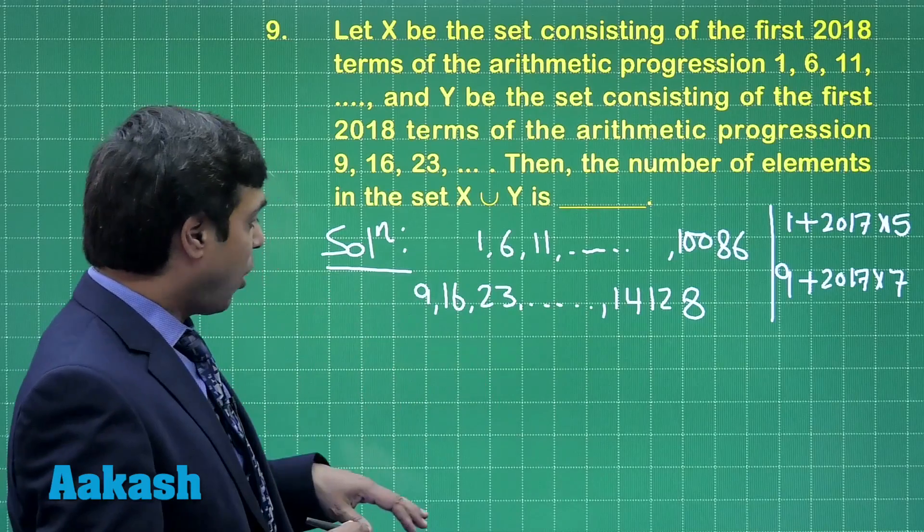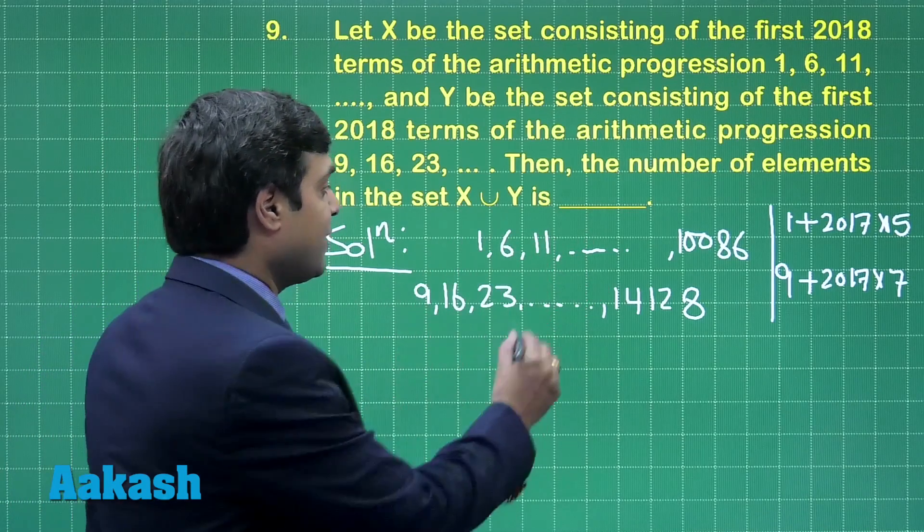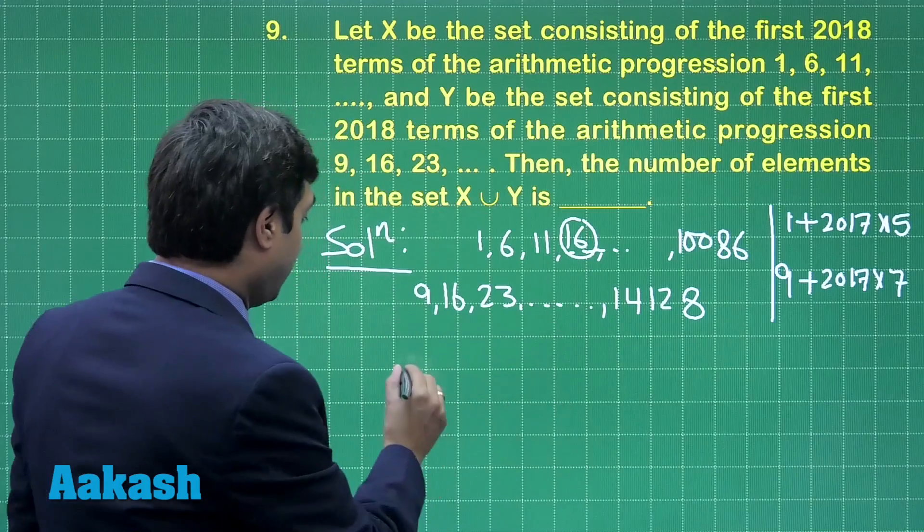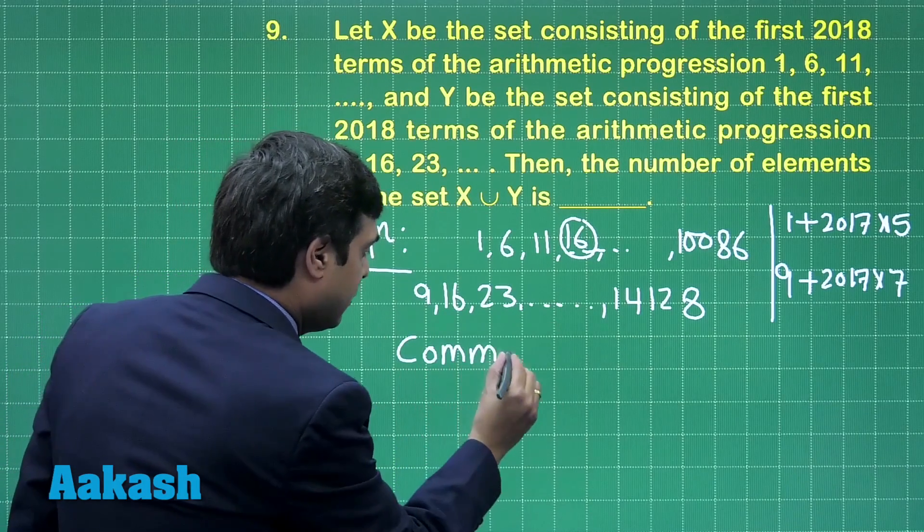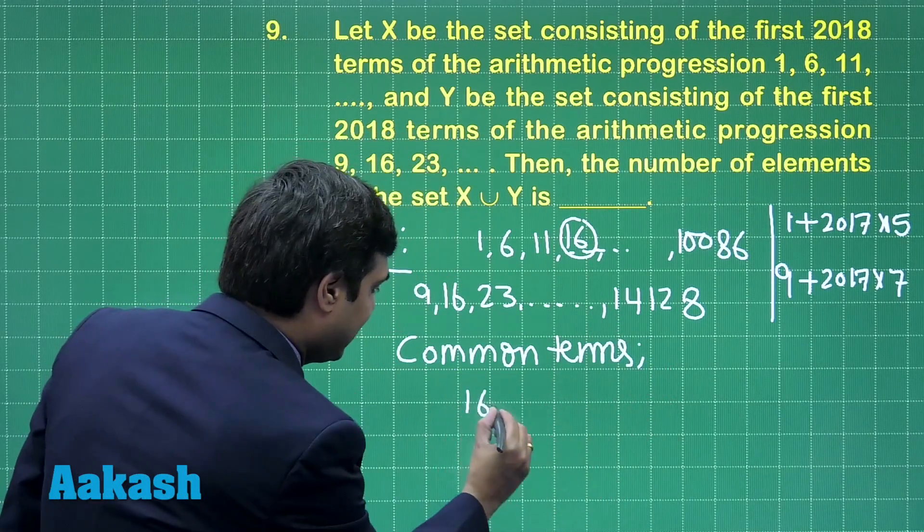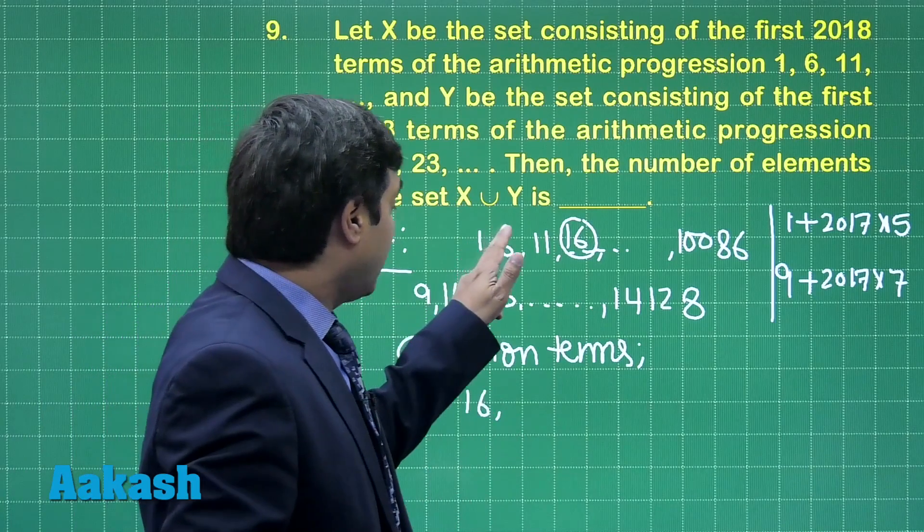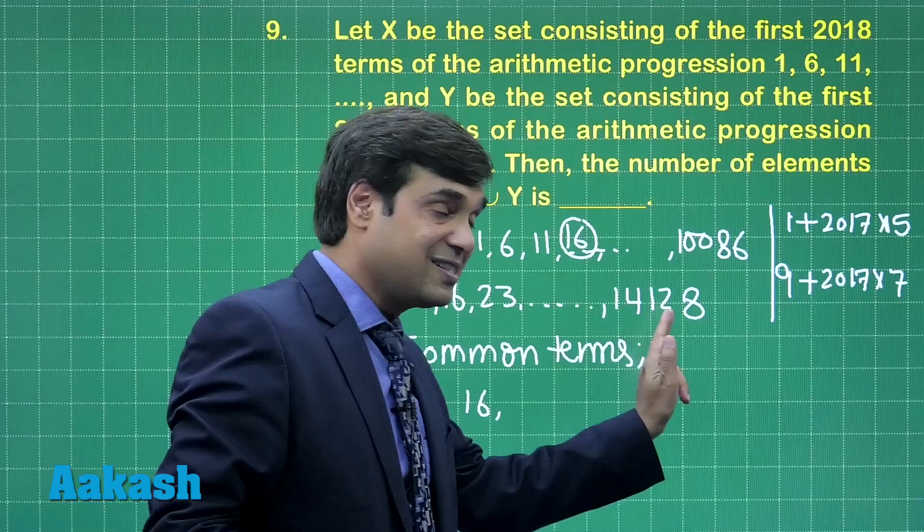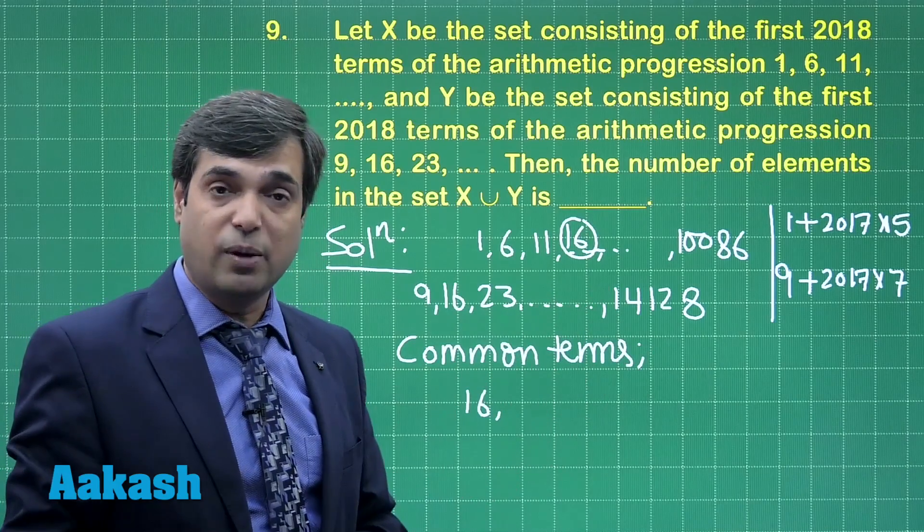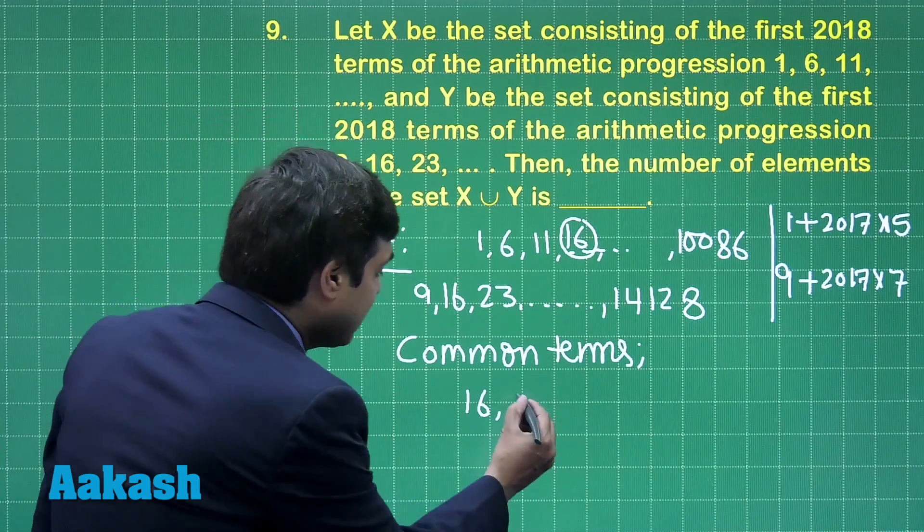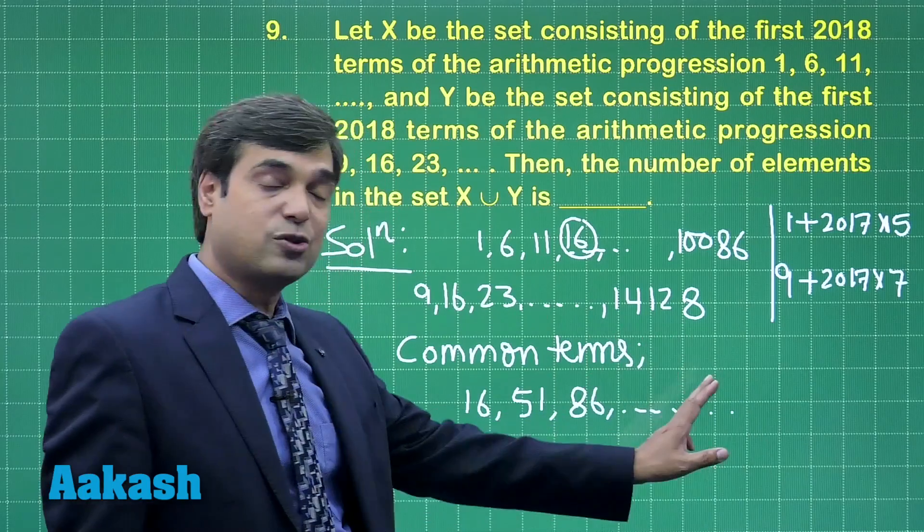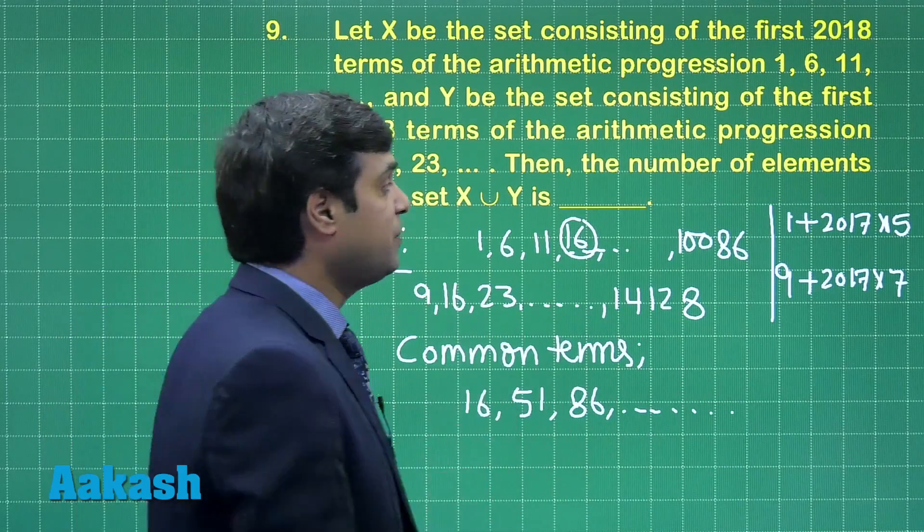Now, the first common term we observe here will be 16. So, the first common term we are getting is 16. Next would be the common difference of first AP is 5, that of second is 7. So, the common difference of this obtained AP will be LCM of these two numbers 5 and 7 which is 35. So, then the next term comes out 51 then 86 and so on. We have to find the last common term so that we can think about the number of terms which are common.